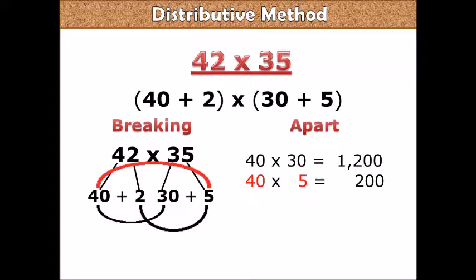Now you have 2 times 5. 2 times 5 equals to 10.